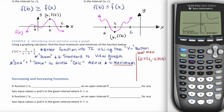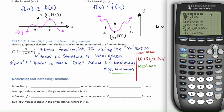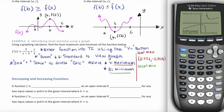To find the local minimum, hit Second, then Trace to access the Calc menu, and scroll to number 3, Minimum — you can also just press 3. Scroll to the correct curve, pick a left bound to the left of the minimum and press Enter, then a right bound past the minimum and press Enter. Guess near the minimum and press Enter. The local minimum is at approximately x equals 5.449 and y equals 3.949.